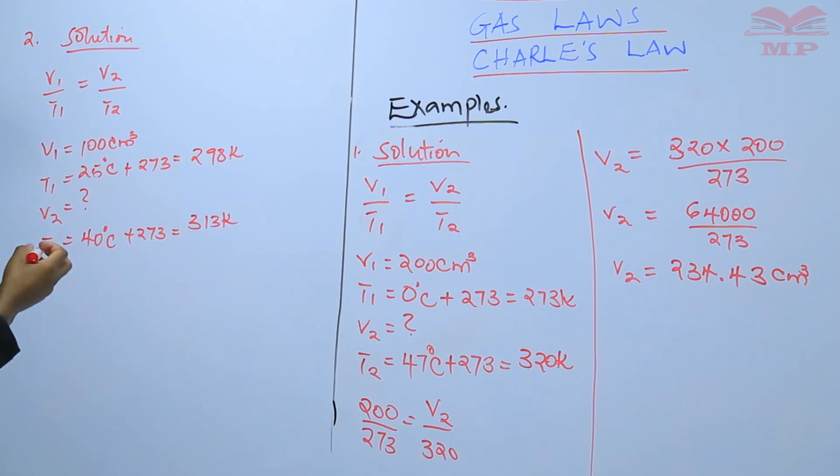You can now be able to substitute V1 to 100 cubic centimeters divided by T1, which is 298, which is equal to V2, which you don't have, divided by T2, which is 313 Kelvin.